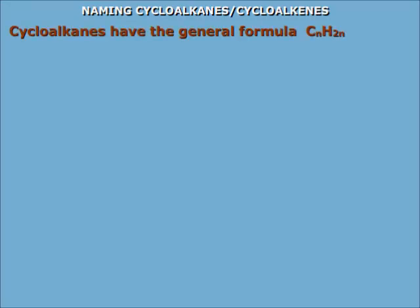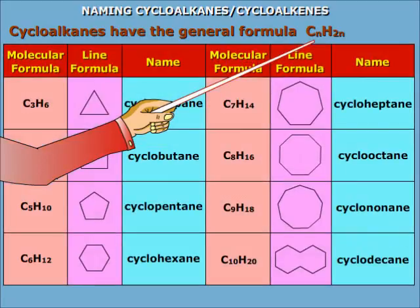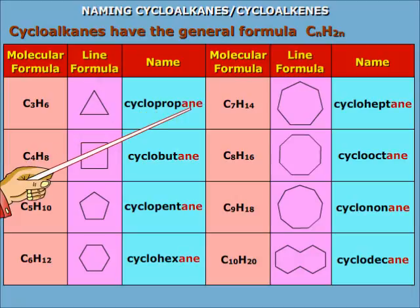Cycloalkanes have the general formula CnH2n. The following table shows the root names of cycloalkanes. Note that the primary suffix is 'an' as usual because there is no unsaturation.